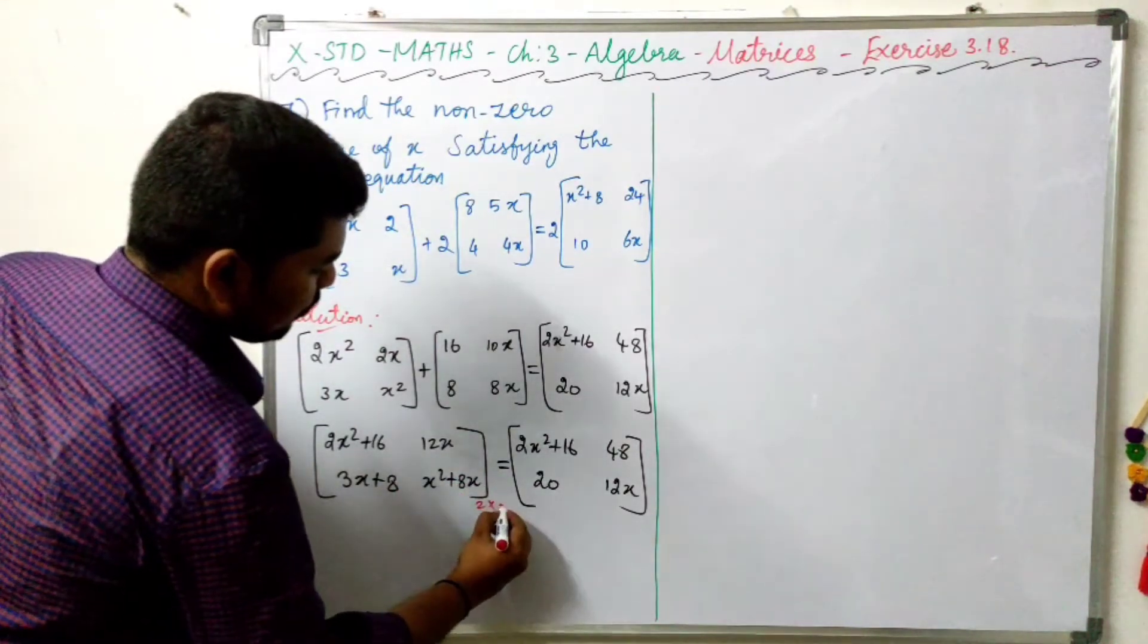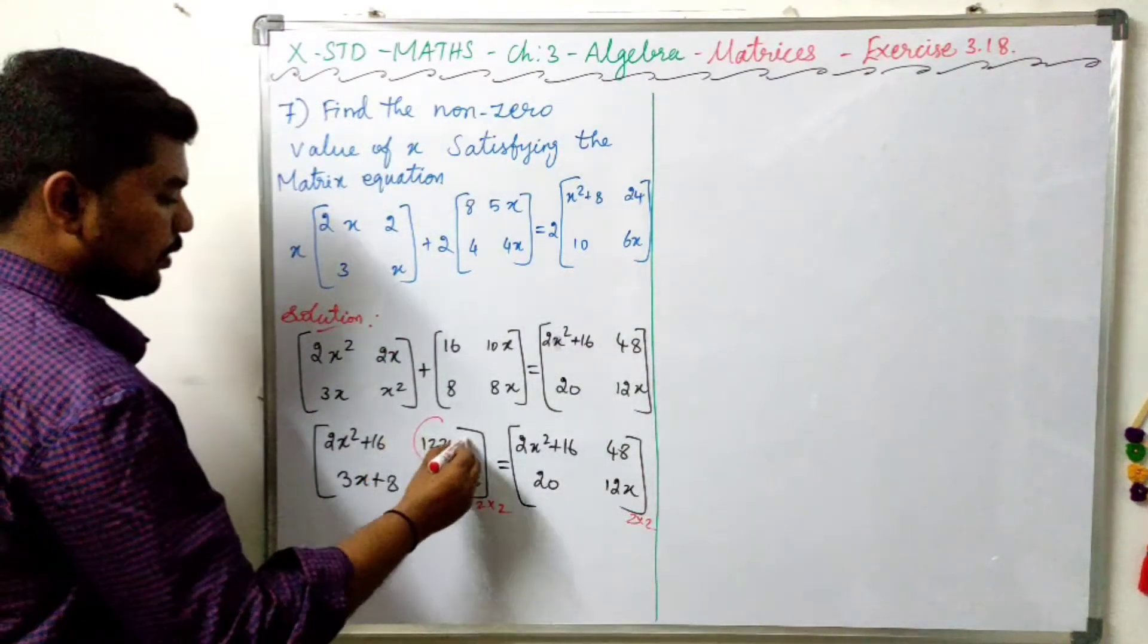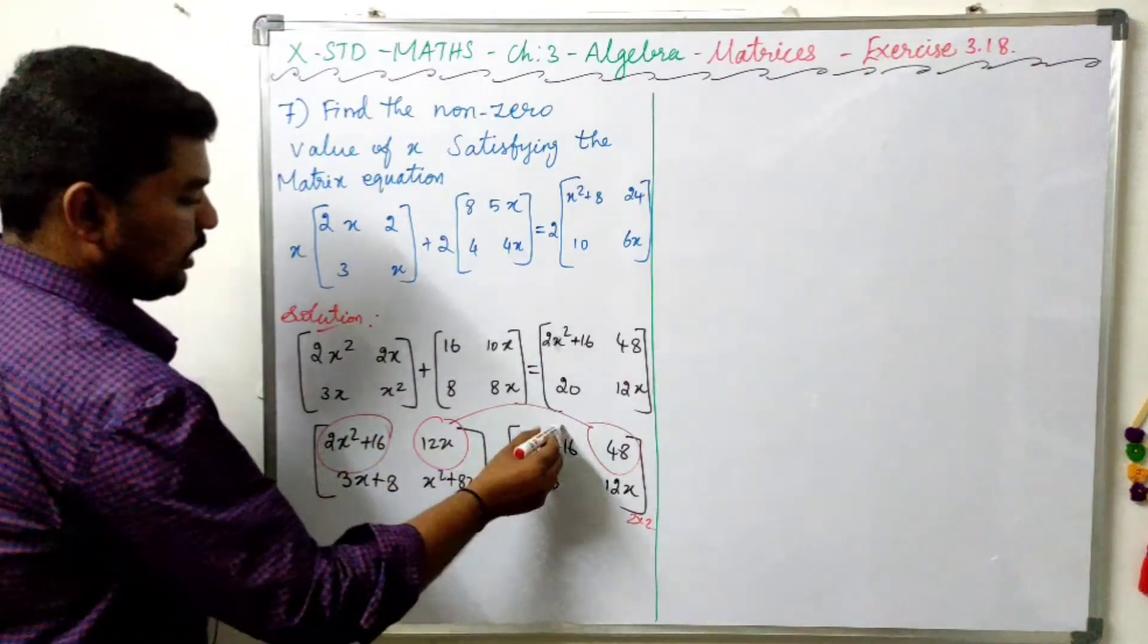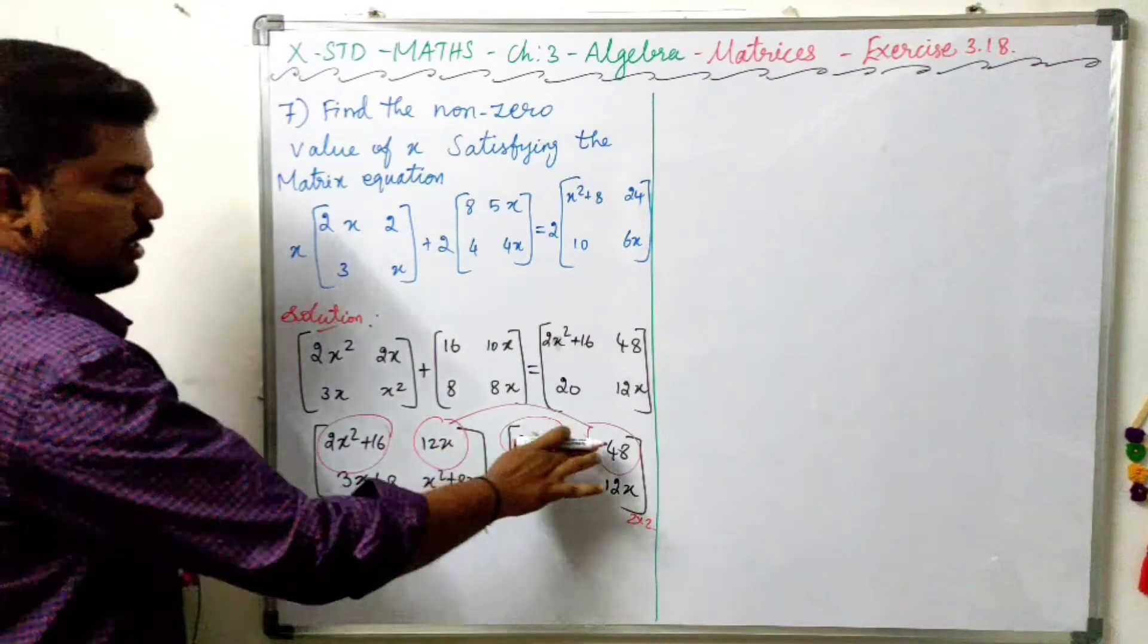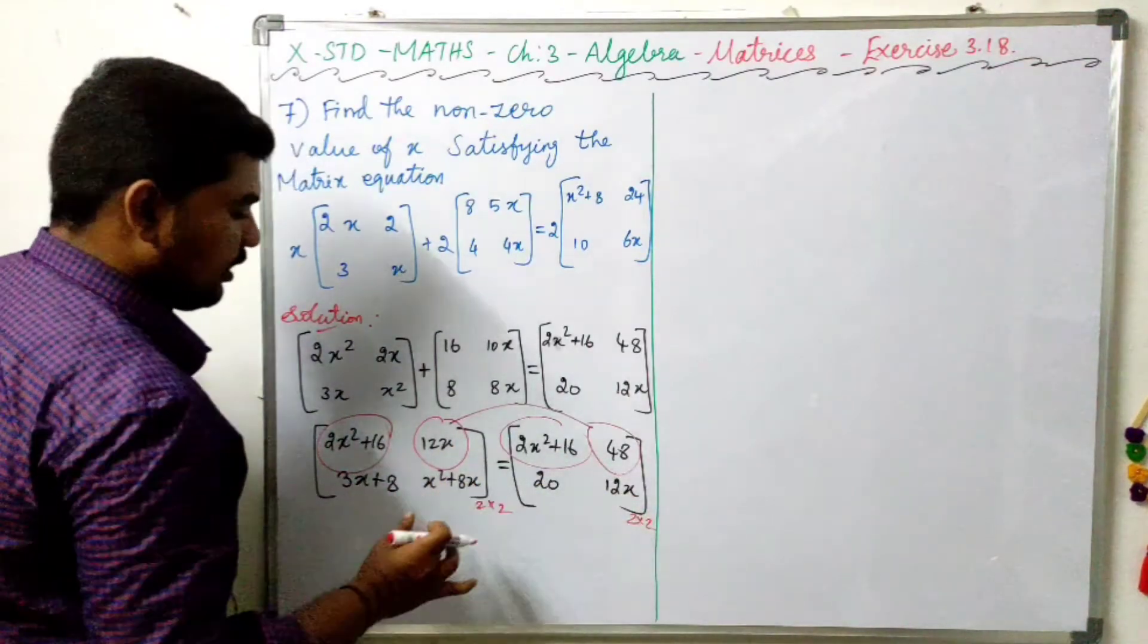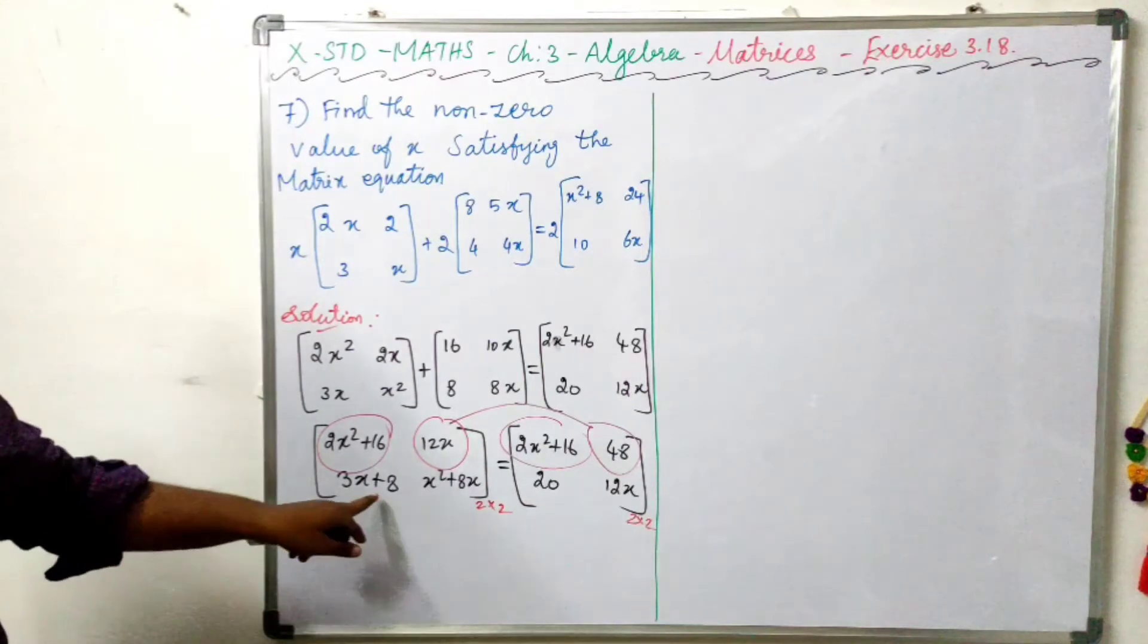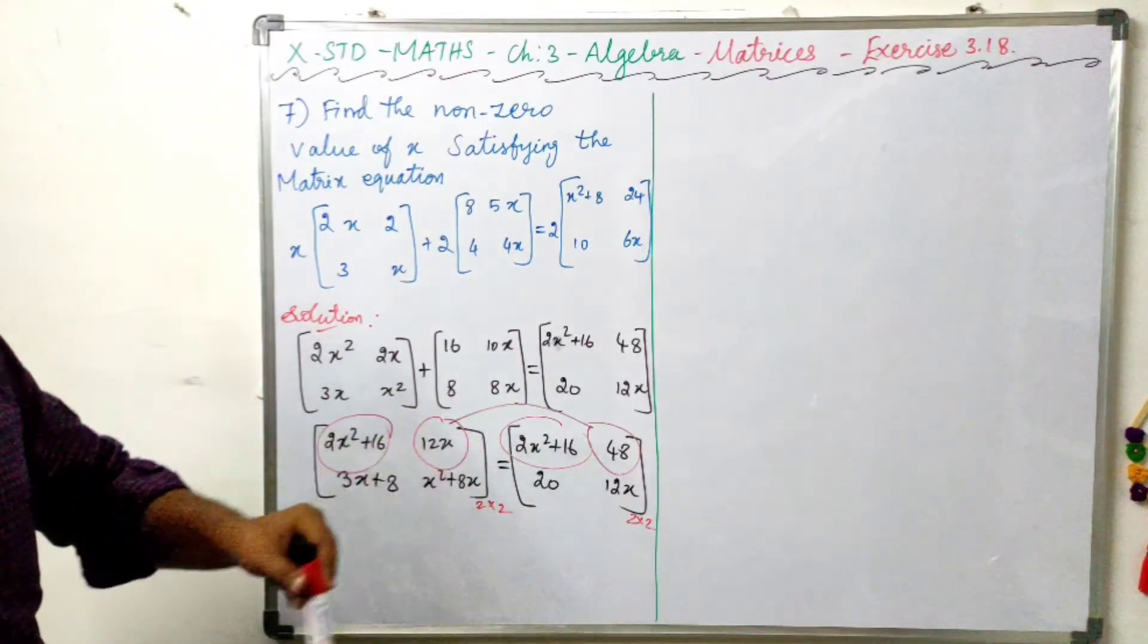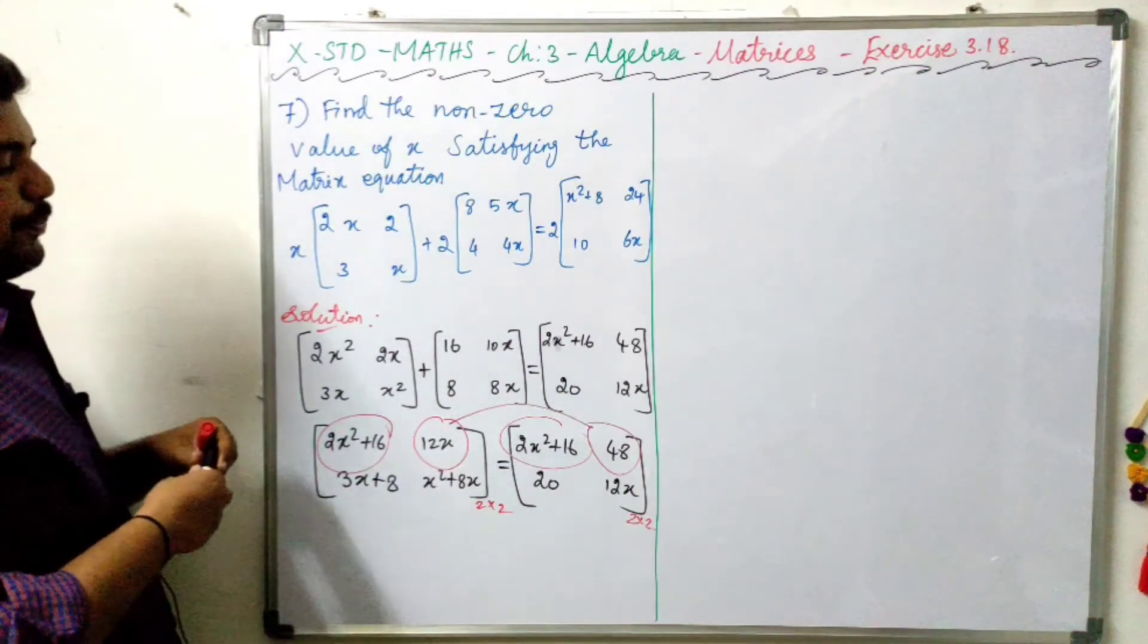If any element has an expression, then the elements are equal. So here we write 2x square plus 16 equals 2x square plus 16. Both are equal. Three x plus 8 equals 20.